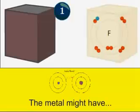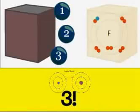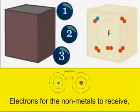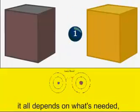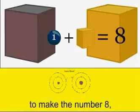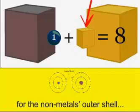The metal might have one, two or three electrons for the non-metal to receive. It all depends on what's needed to make the number eight for the non-metal's outer share.